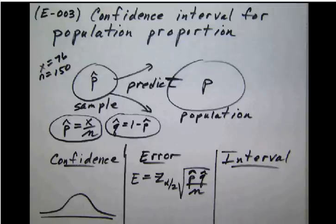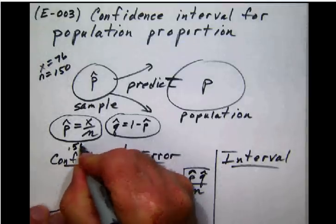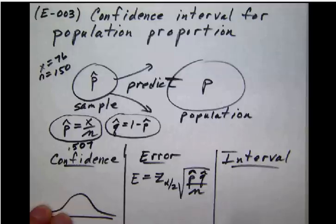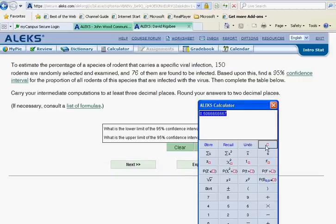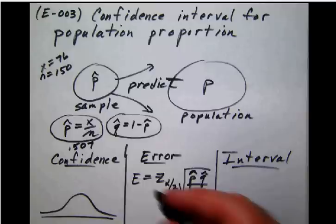Okay, so our p-hat is going to be 0.507. And while we're at that, let's go ahead and calculate q-hat as well. Because remember q-hat is going to be the complement of that. We're going to need that number here in just a second. So let's clear. Take one minus 0.507 and let's calculate that to be 0.493. Let's make a note about that over here. 0.493.